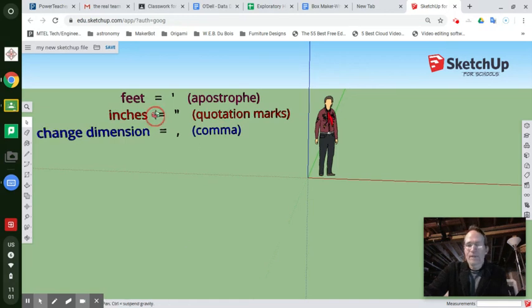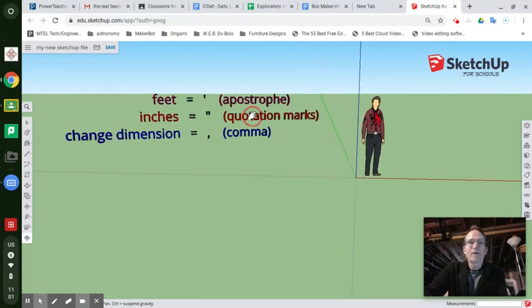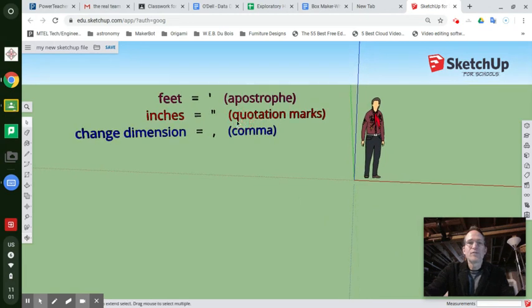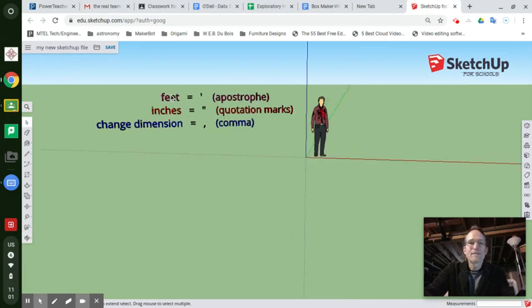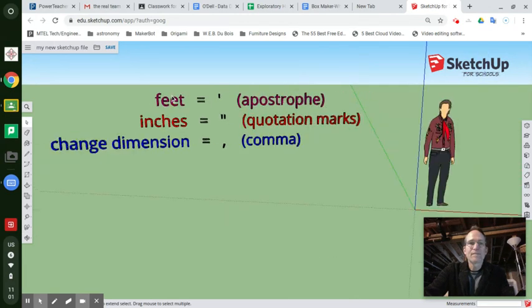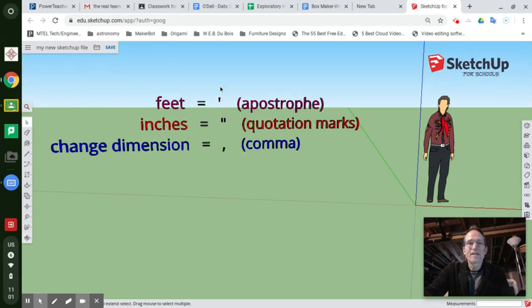So, in SketchUp, punctuation will allow you to, instead of writing the word feet like this, F-E-E-T, you don't have to do that. Feet actually equals an apostrophe. An apostrophe is higher up. It's right next to your enter key on your keyboard. That's an apostrophe.